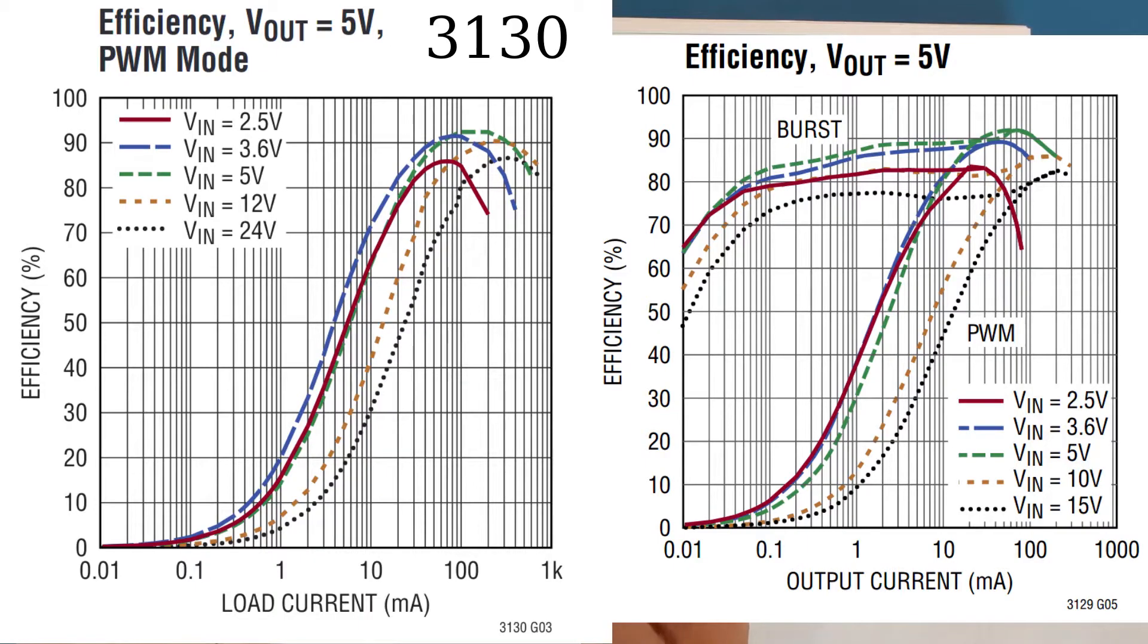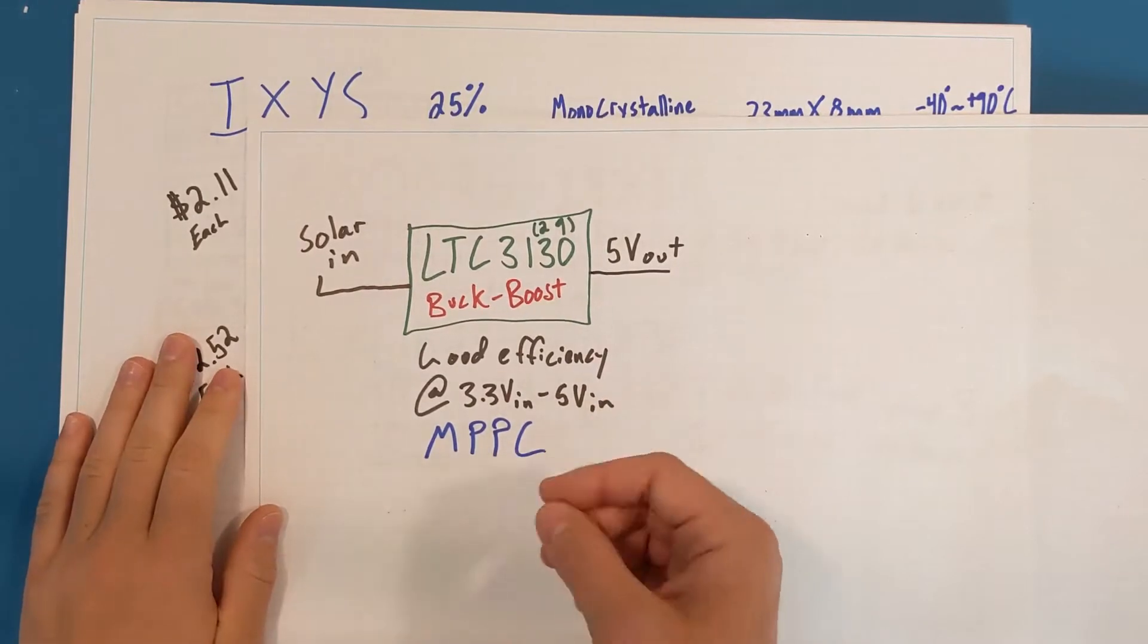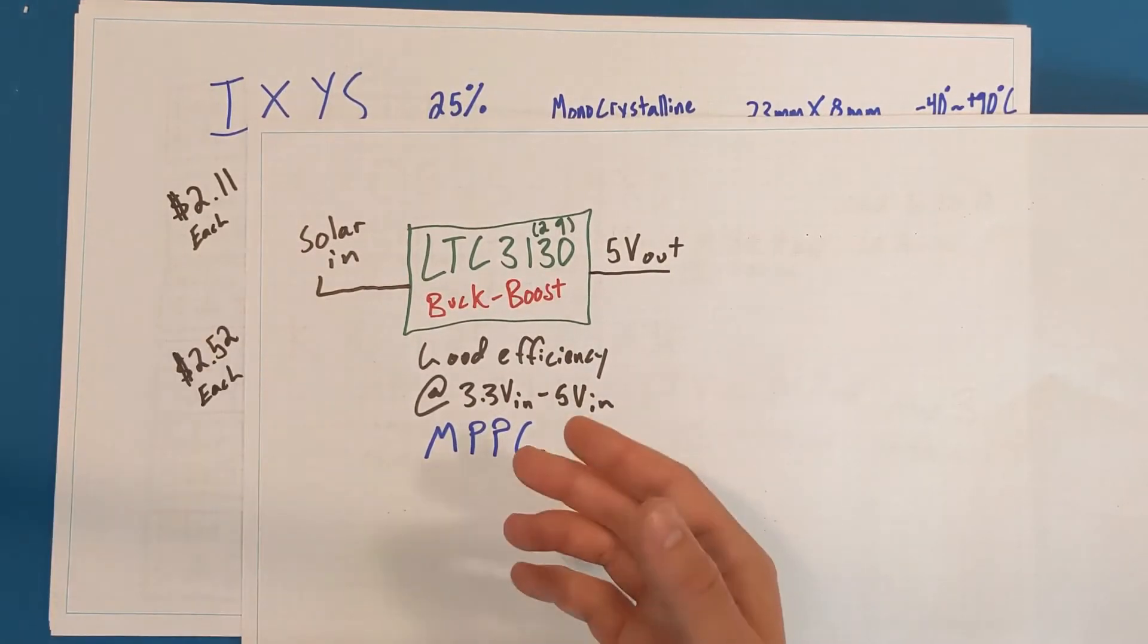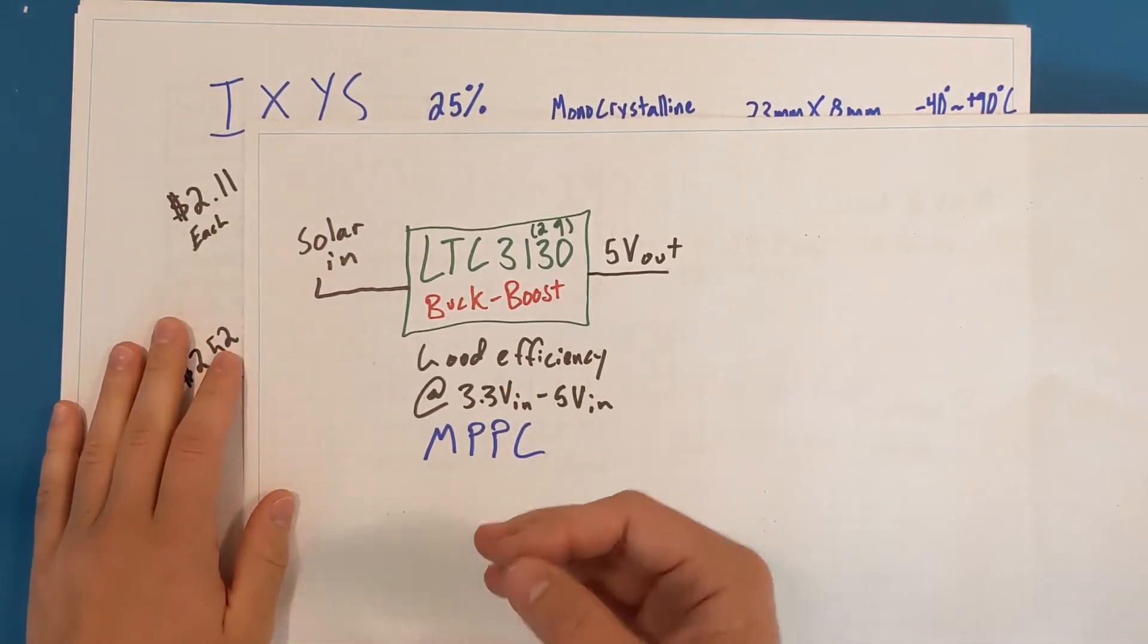Here are the efficiency curves for the 3130 or the 3129 for generating a 5 volt output under PWM mode. As you can see, they are most effective with an input between 3.6 volts and 5 volts. So my solar cell output ought to be between that range. That means I'm targeting the maximum power point of the solar cells being between 3.6 volts and 5 volts.